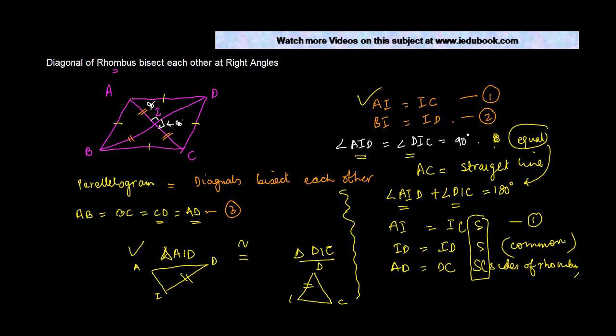And if that be the case, then their corresponding angles, which is angle AID, should be equal to angle DIC. Because they lie between the common side and these two bisected portions.